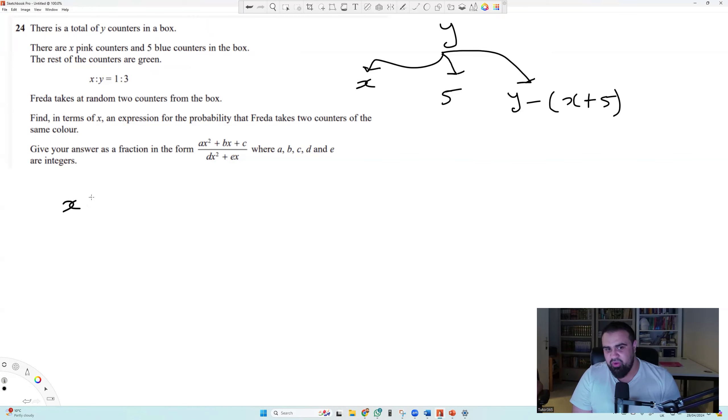So basically the rest of them are whatever was inside the box minus X plus five, because X plus five gives you the pink counters and the blue counters together. And I also want to introduce my associates here, Kweli and our students Samaya and whoever else wants to speak up. They're going to chime in whenever I get something wrong.